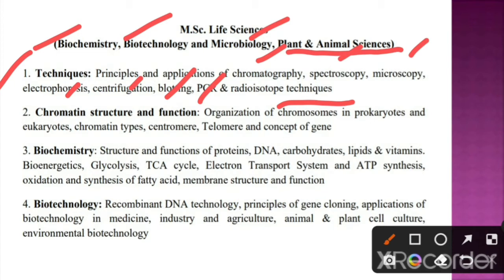Unit 2 is about chromatin structure and function. Here we have to study the organization of chromosomes in prokaryotes and eukaryotes, then chromatin types, centromere, telomere, and the concept of the gene.